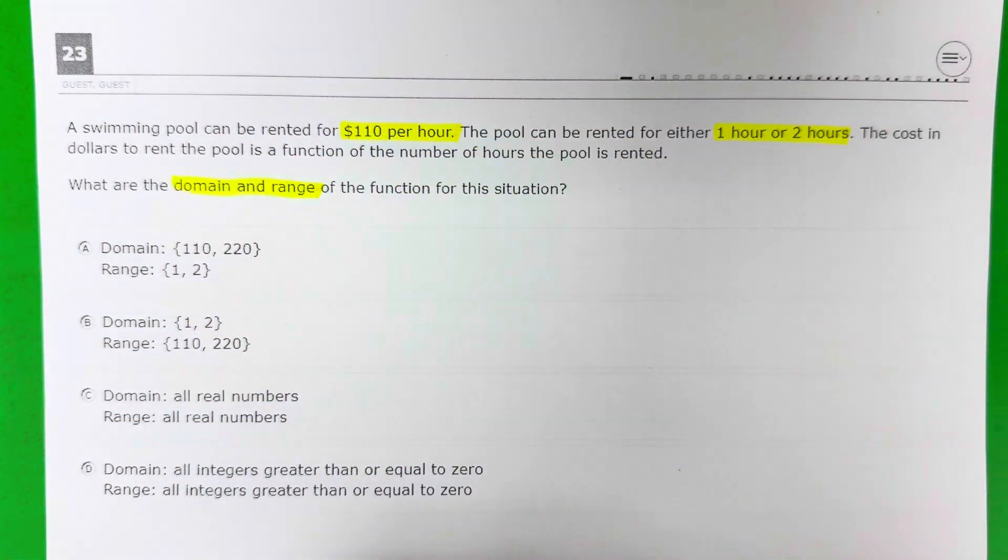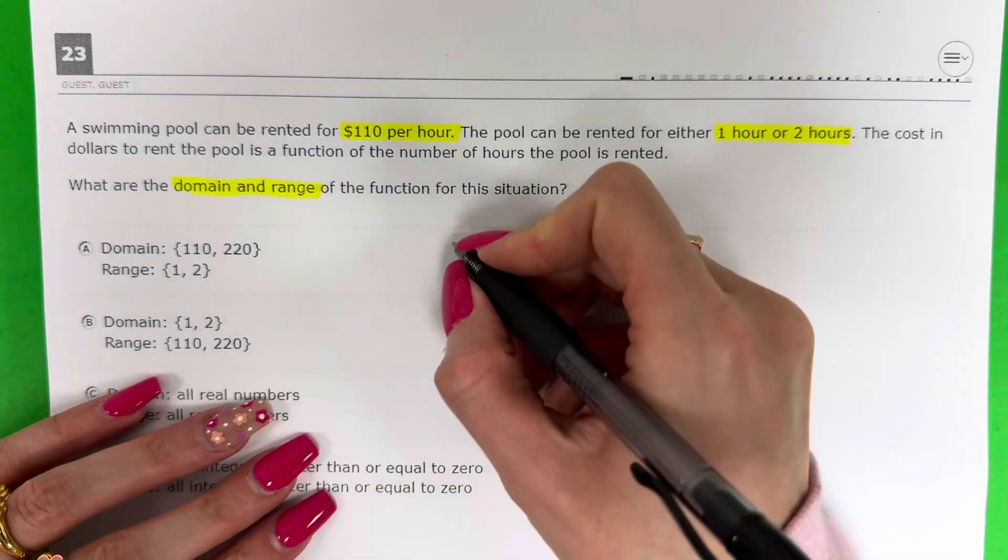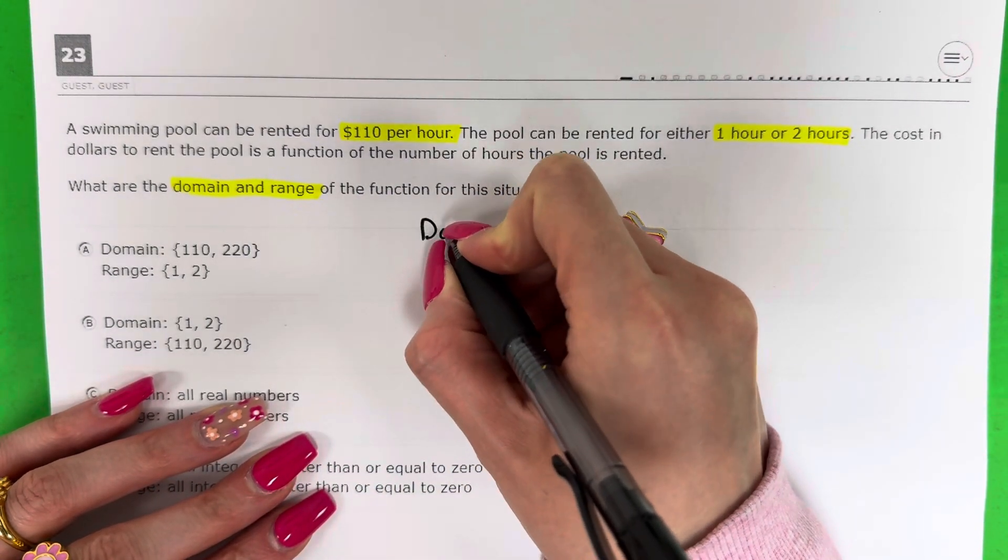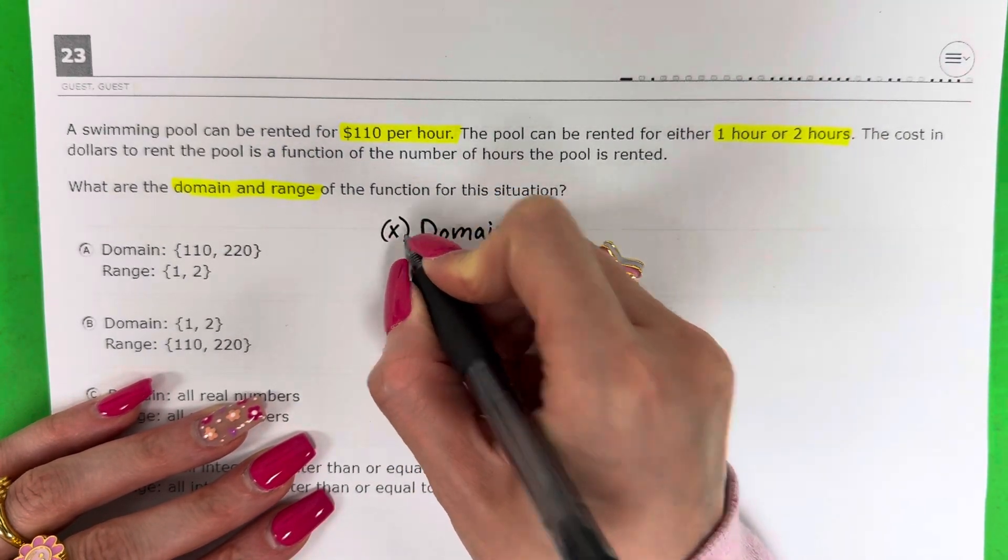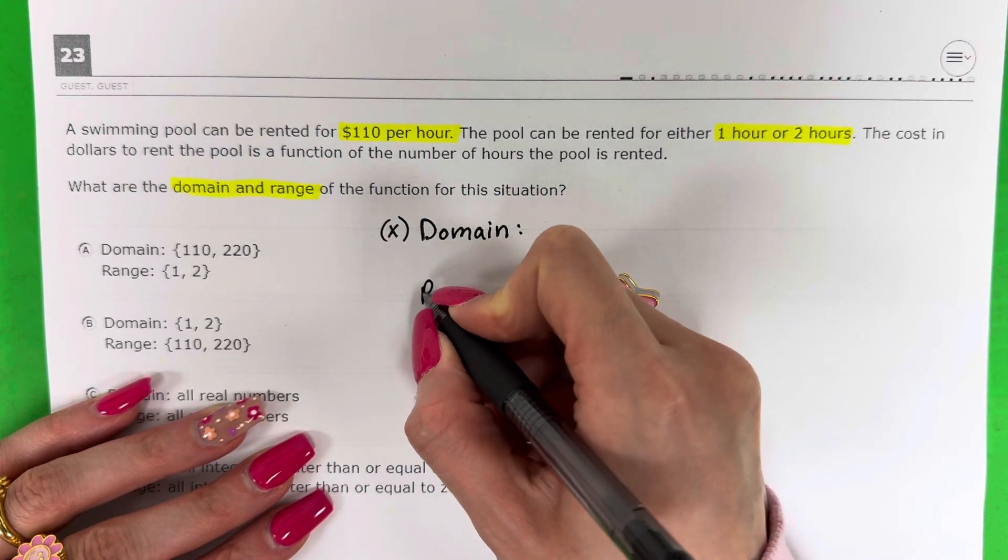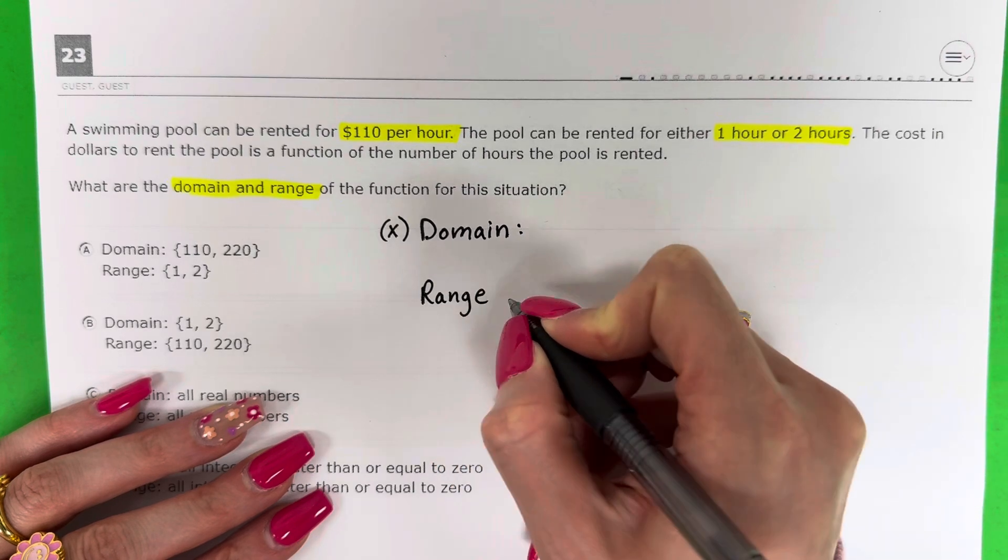Let's go ahead and talk about domain and range. Domain is the list of x values. Range is the list of y values.